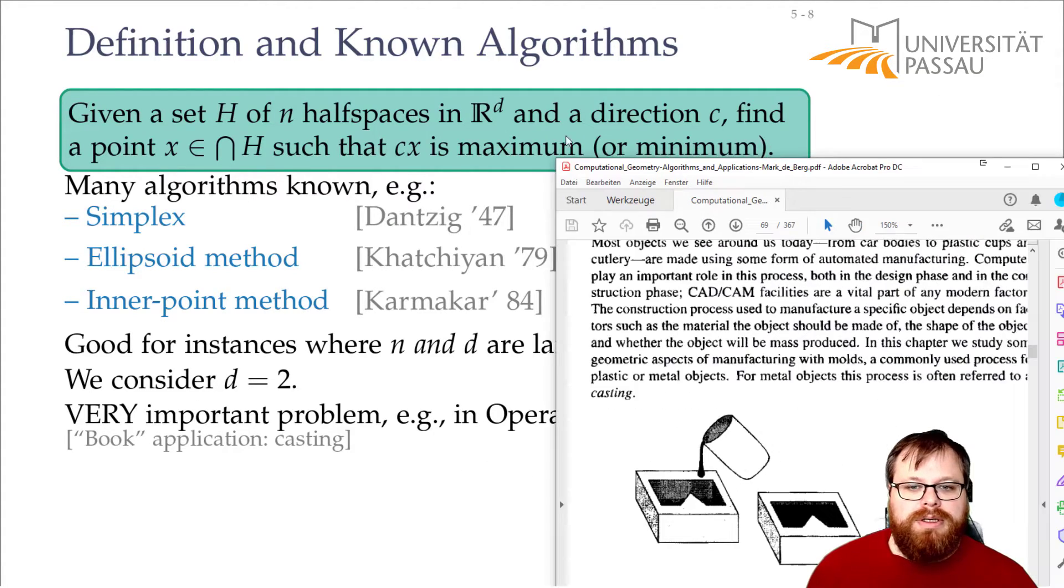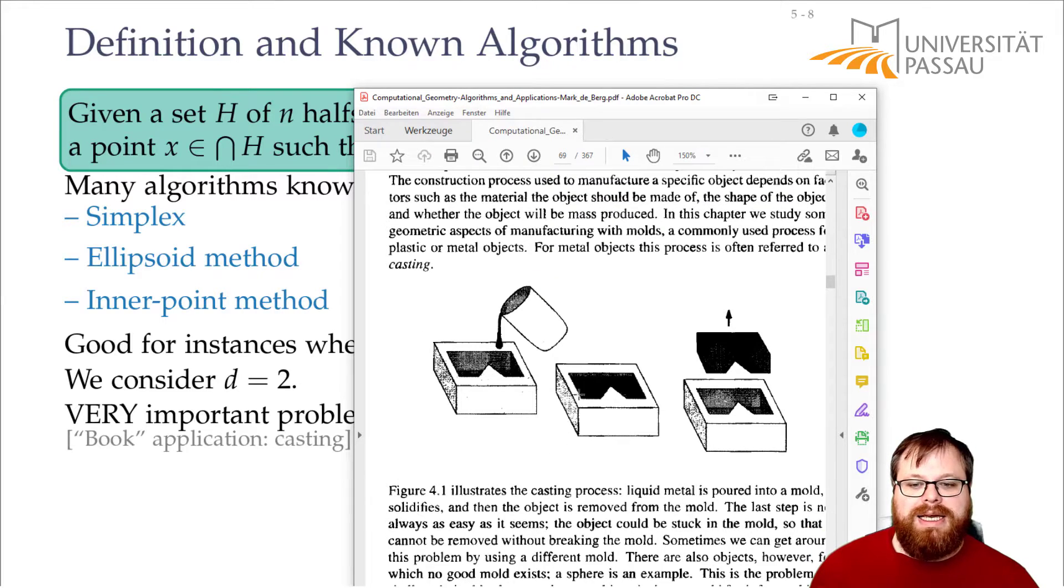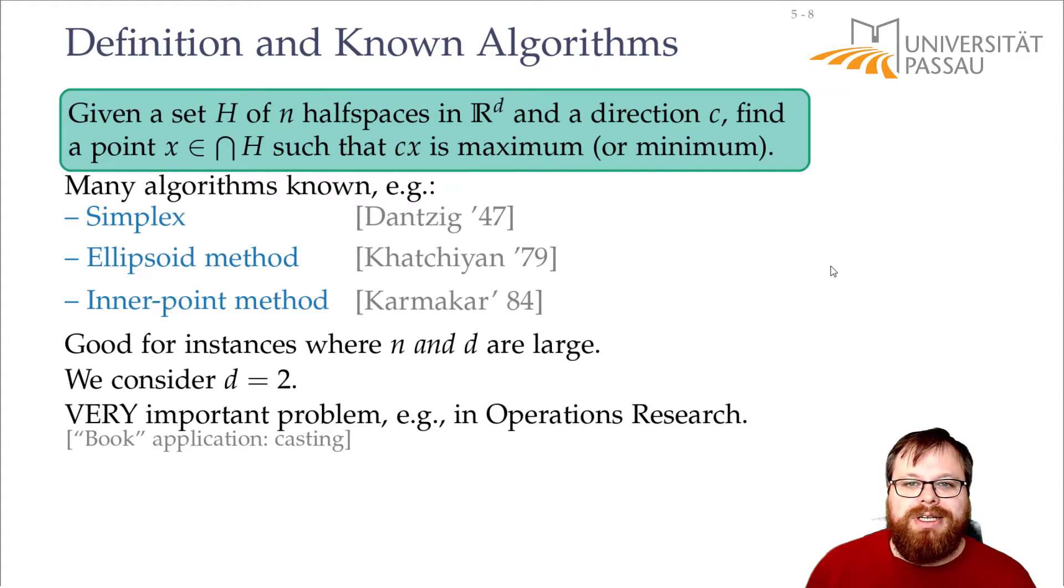For example in the book they give this example of casting iron. So you want to have some cast and you want to build some three-dimensional object and then you want to be able to remove it. And to figure out if you can remove it you have to figure out in which direction. And if you want to move it upwards then basically every point in the plane gives you one direction where you can move it out. And that you can formulate as such a two-dimensional linear program.